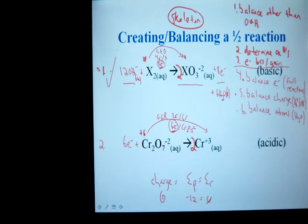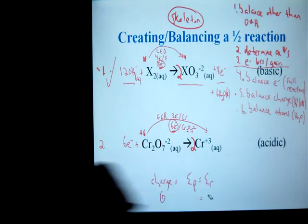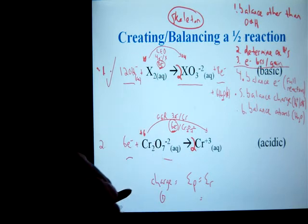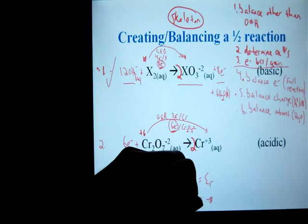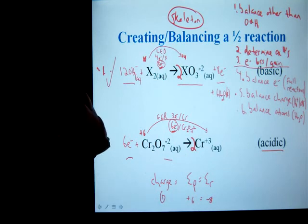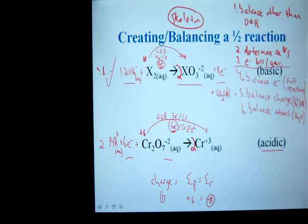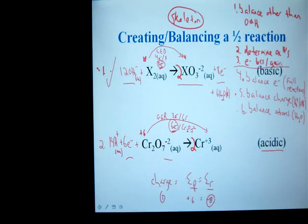With the acidic one, working with the charge again. On my reactants, I have -6 and -2 for -8. And on the products, I have a +6 charge. Well, this time I'm in an acid, which means I have to add H⁺. So for my reactants, I'm at -8. So I want to put 14 H⁺ over here to bring that value up to +6. So now my charge is balanced.